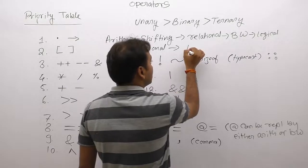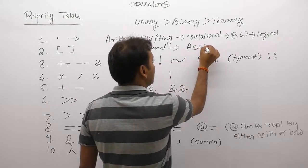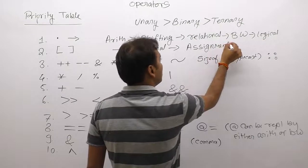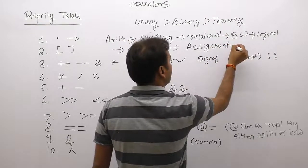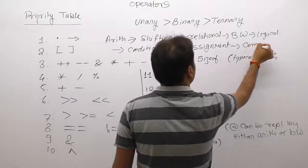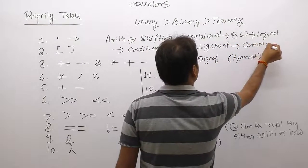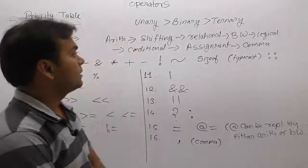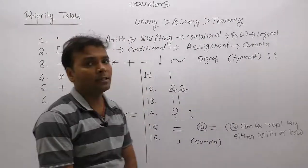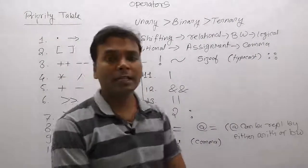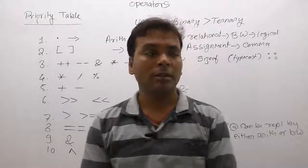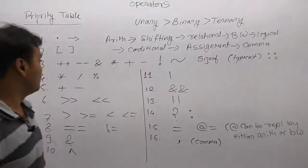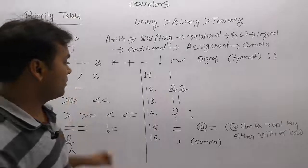After logical comes conditional operator, then assignment operator, and finally comma operator. Please note down and remember this priority table. Next we will highlight all operators category-wise, one by one.